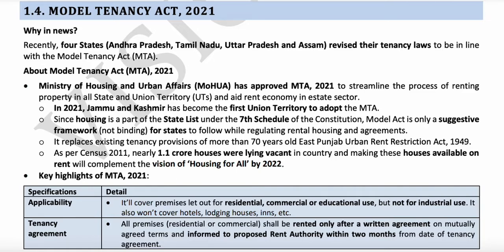Before this Act, we had the East Punjab Urban Rent Restriction Act 1949. The Model Tenancy Act 2021 came as a replacement for that Act. Jammu and Kashmir became the first union territory to adopt this Model Tenancy Act.